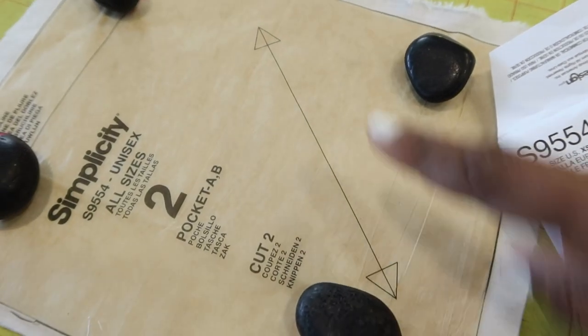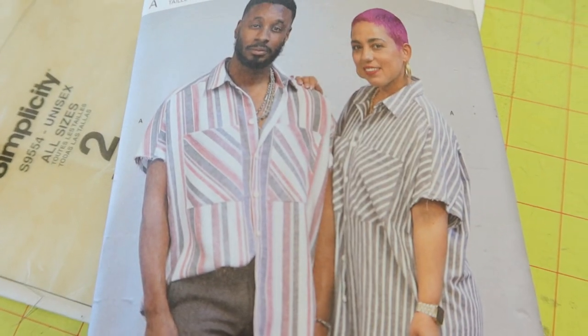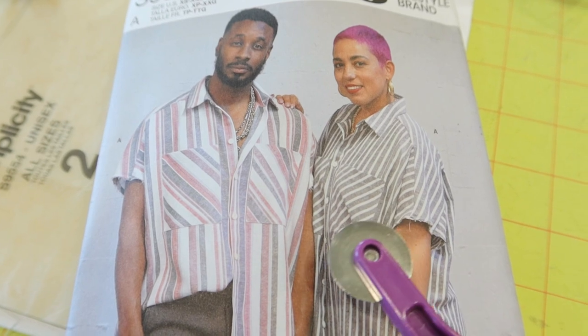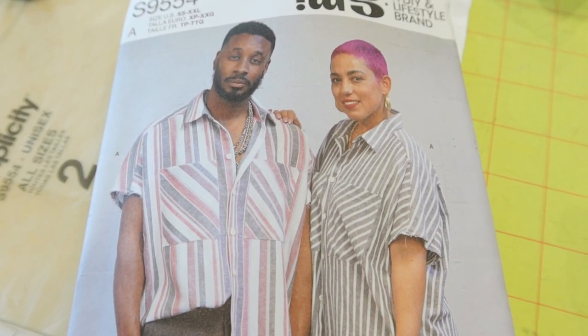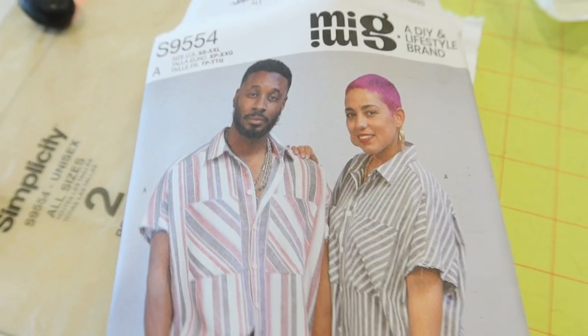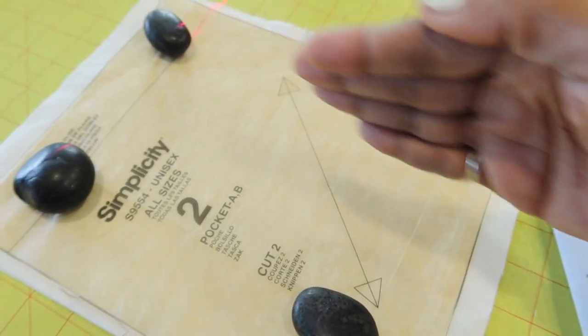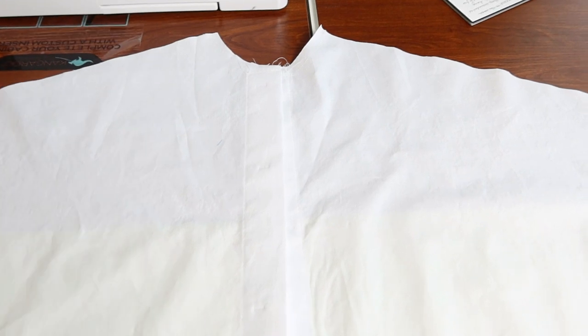This pocket piece has a grain line that is on the bias. If you're making this in a striped fabric, the bias cut will have your stripes going at a diagonal, which is a nice feature. Since I'm using a solid fabric with no stripes, I'm just going to have my grain line go straight up and down. I don't have to worry about cutting out on the bias.